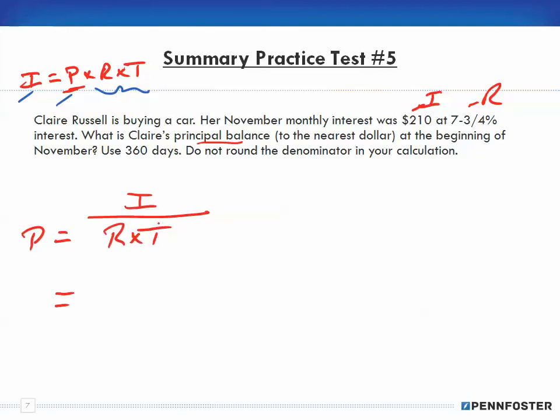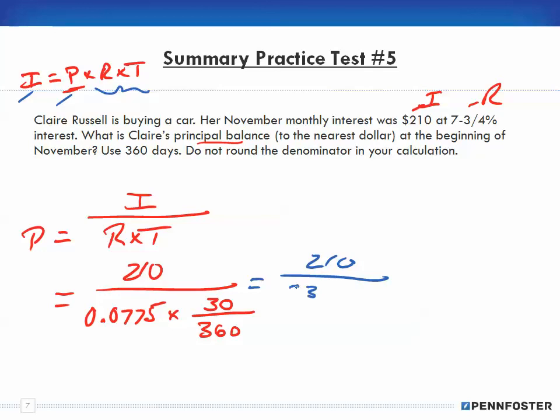Now I just fill in the variables. My interest is $210 and my rate is 7.75%, so that's 0.0775 times, for my time there's 30 days in November and we're using 360. We have to do the math in the denominator first, so we keep our 210 in the numerator and we do the math in the denominator. We have 0.0775 times 30, that gives us 2.325, and that's all over 360. When I divide, I keep my numerator. If I take my 2.325 and divide it by 360, I end up with 0.0064583.